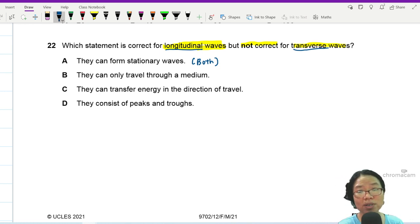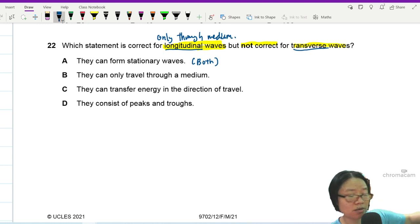They can only travel through medium. Okay, so longitudinal wave, this one, can only travel through medium. So only through medium. Whereas transverse wave, you can think about light. Light can transverse, can travel through vacuum. So light can pass through vacuum. So you can see the light from the sun.